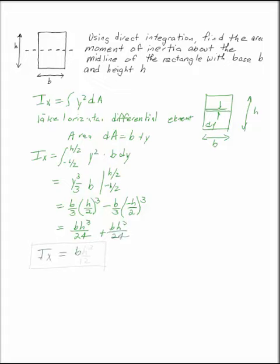Ix for a rectangle about its midline is b h cubed over 12. One-twelfth b h cubed.